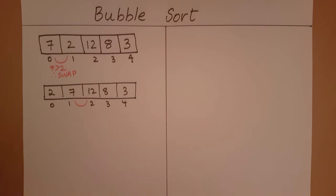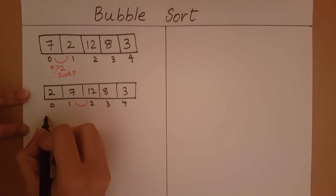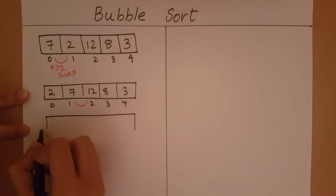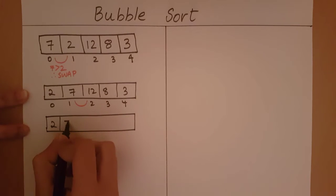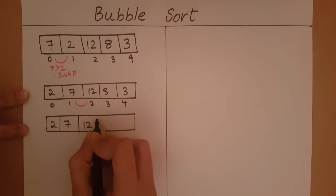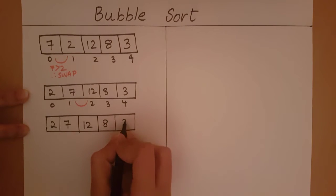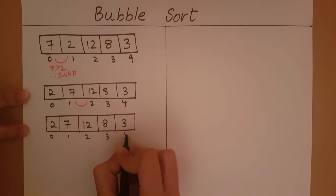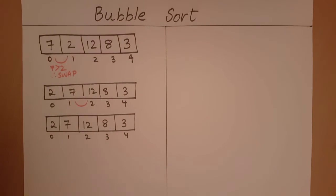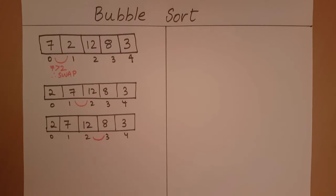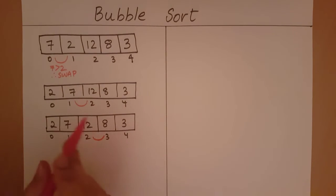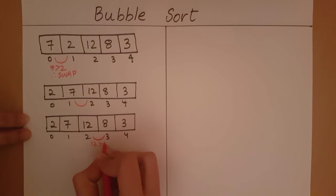Let's see what the next two elements we are going to compare are. This time we are going to compare the element at index 2 and the element at index 3. 12 is greater than 8, so we want 12 to come after 8. But it's not in the correct order as of now, so we will swap these elements.